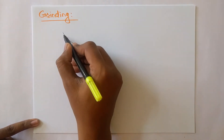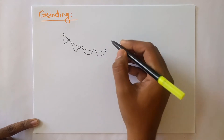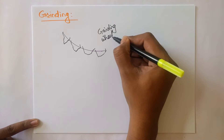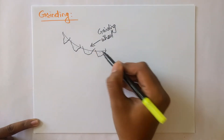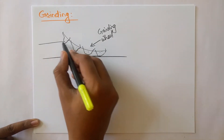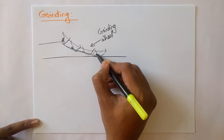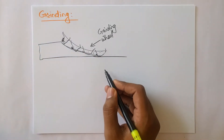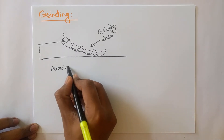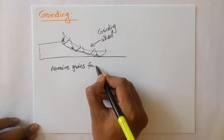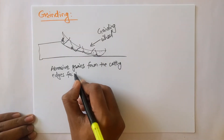Here is a microscopic view of the grinding wheel. In the grinding wheel, there are numerous abrasive grains. These abrasive grains are responsible for the removal of metal from the workpiece — a very small amount of workpiece metal is removed because of the abrasive grains. These abrasive grains form the cutting edges for the grinding wheel.